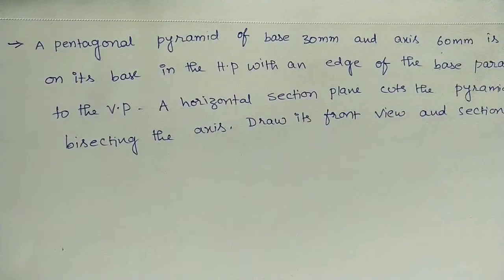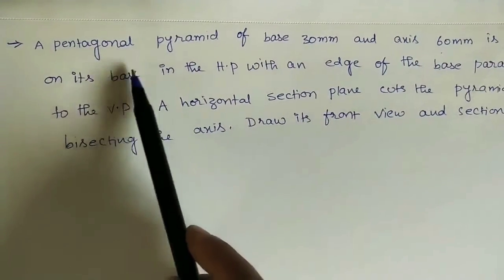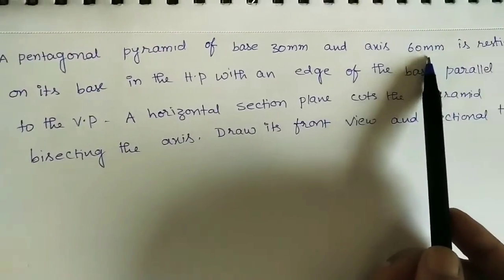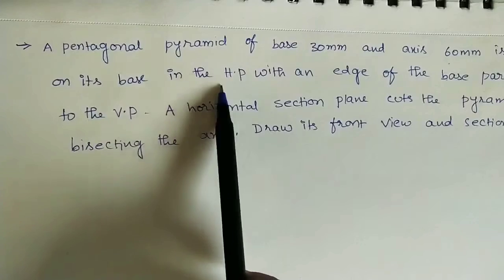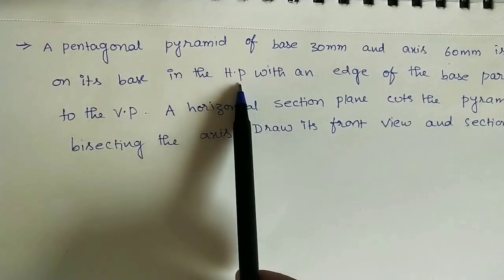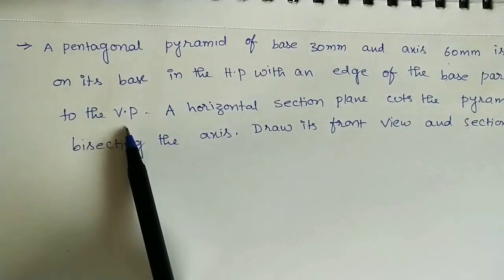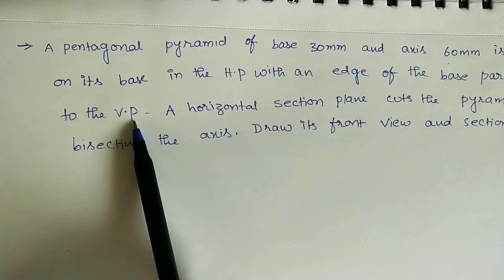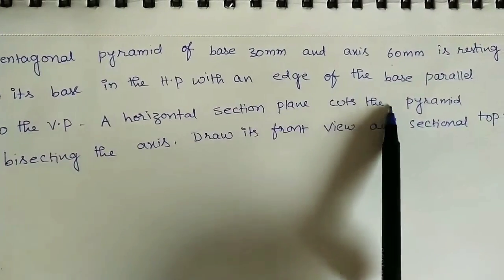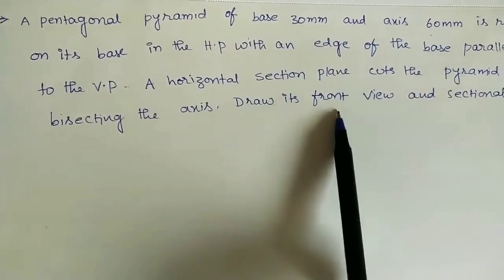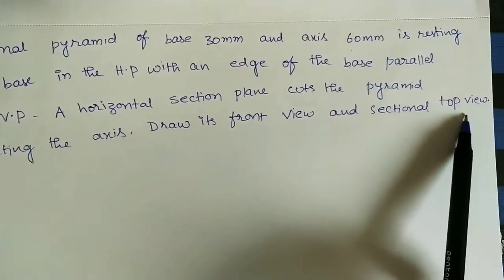Hi friends, welcome to my channel. Let us discuss sections of solids. Here is the given data: a pentagonal pyramid of base 30mm and axis 60mm is resting on its base in the HP (horizontal plane) with an edge of the base parallel to the VP (vertical plane). A horizontal section plane cuts the pyramid bisecting the axis. Draw its front view and sectional top view.